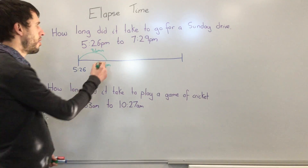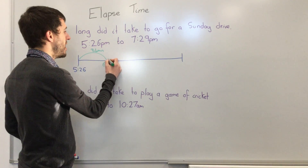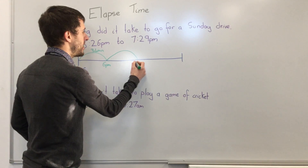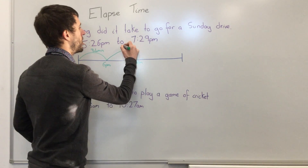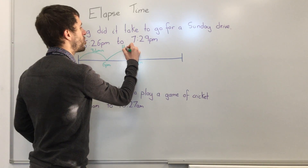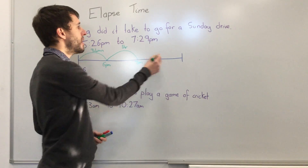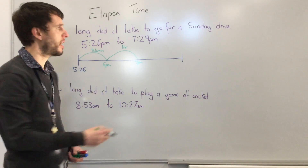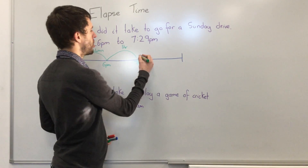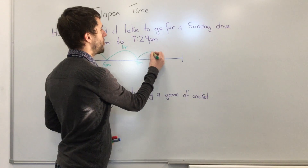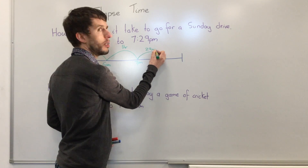Then I know I've got an hour from 6 to 7 p.m., so I've got one extra hour that I've jumped. Then I look at how many minutes I have left, and I have 29 minutes, so I'm going to be jumping 29 minutes.